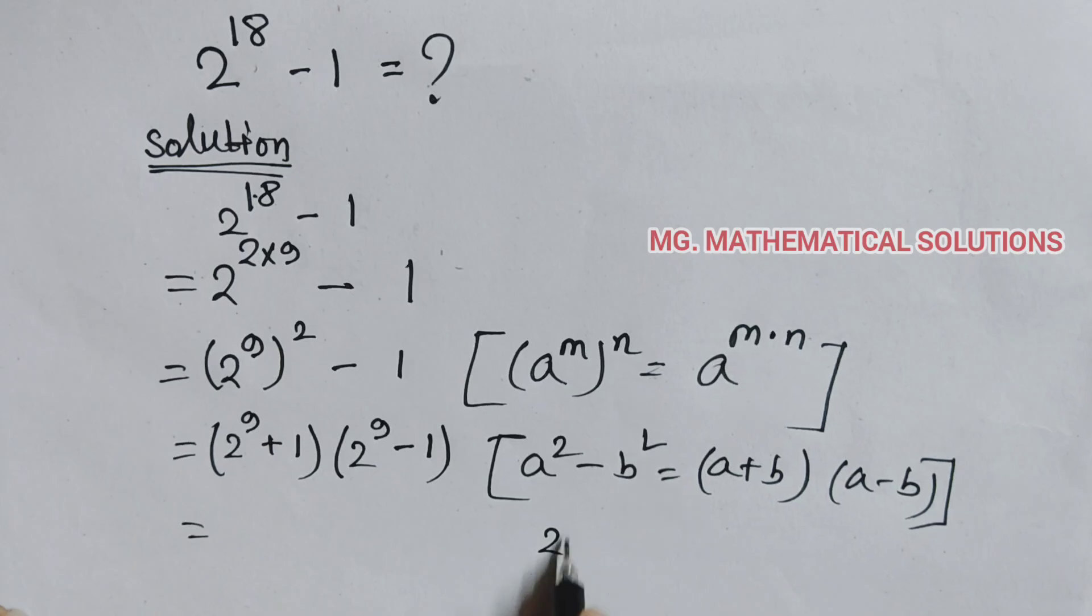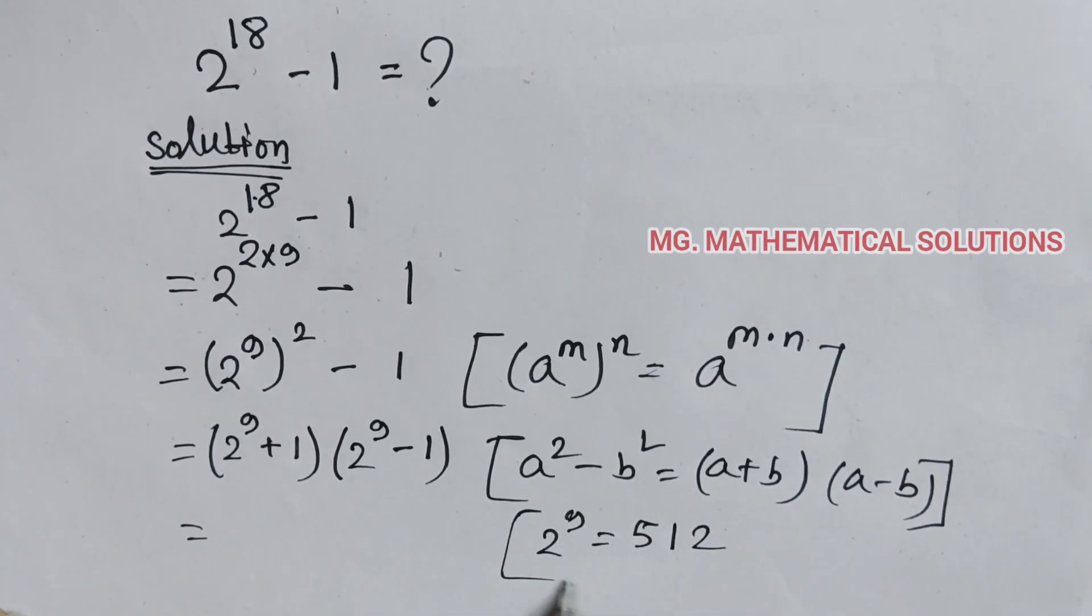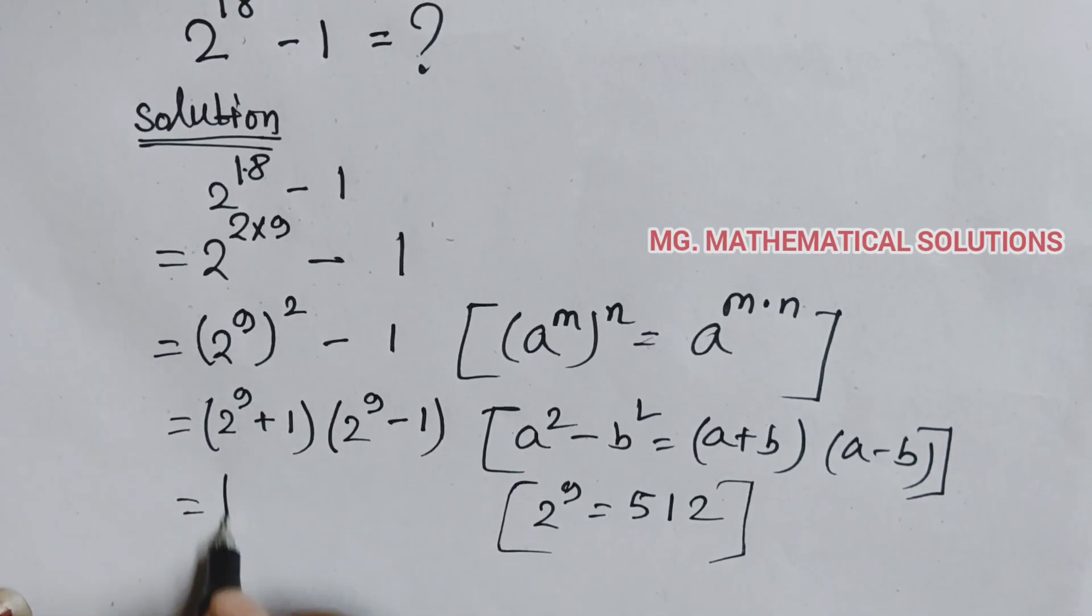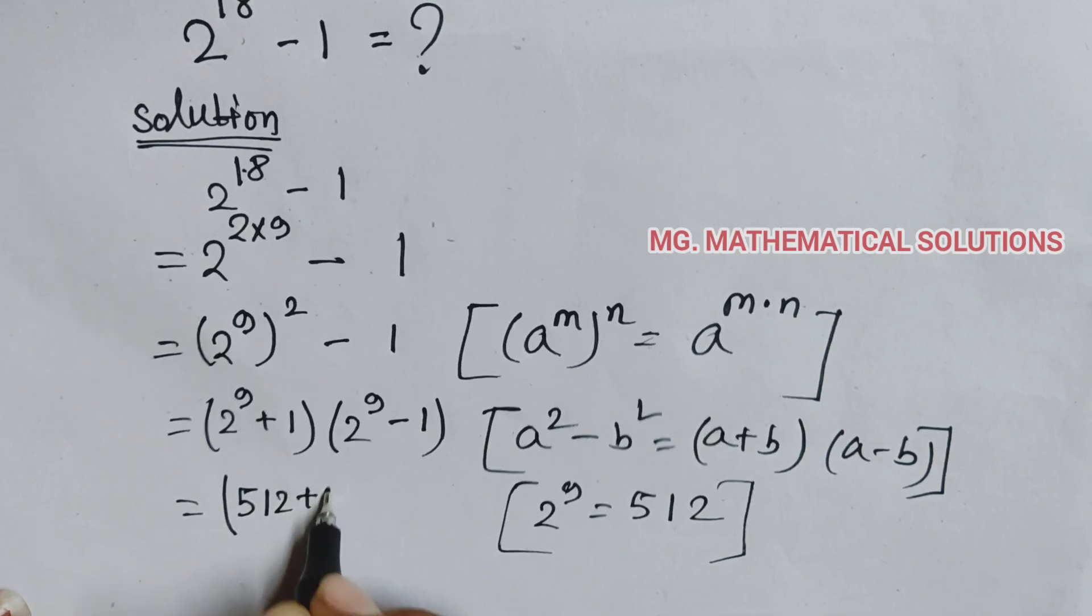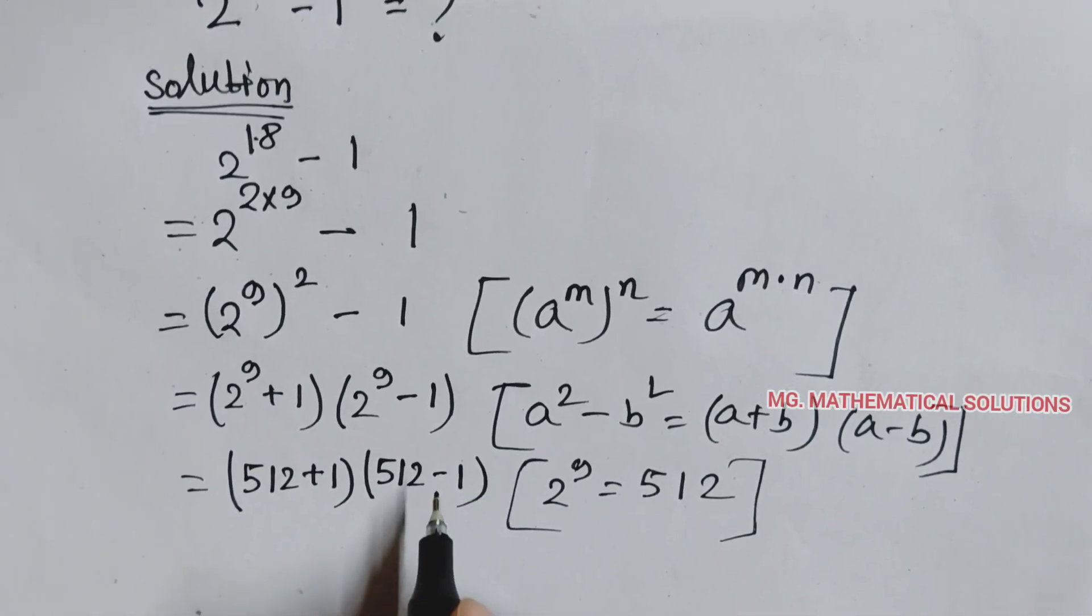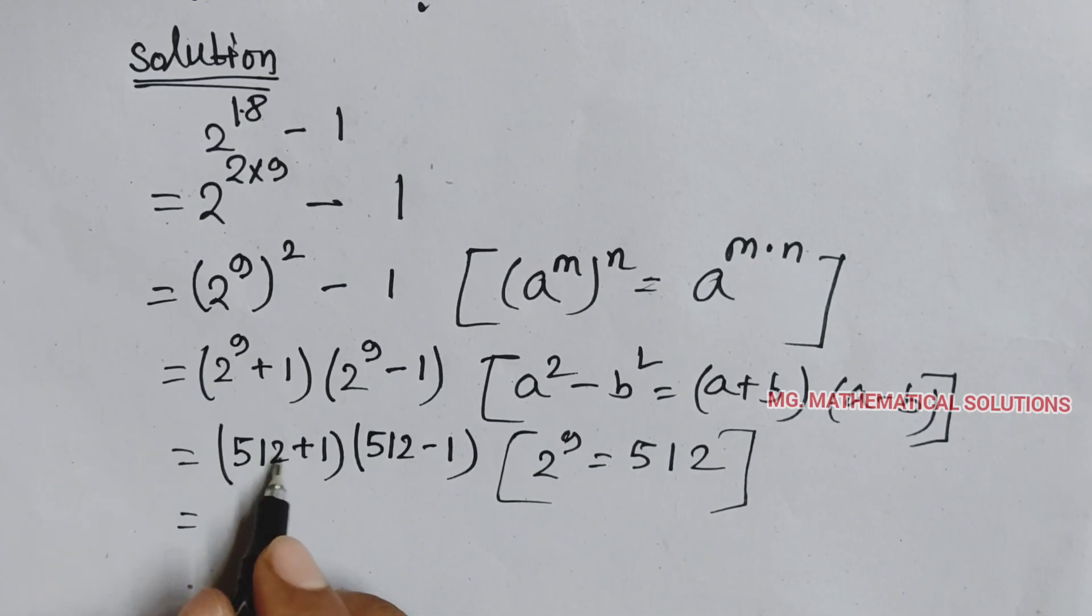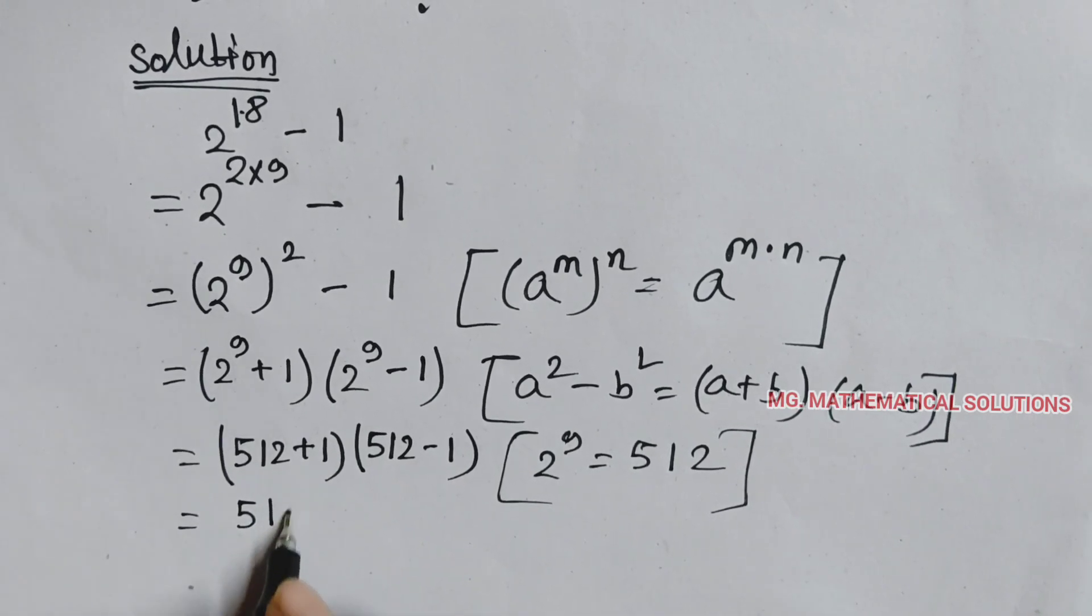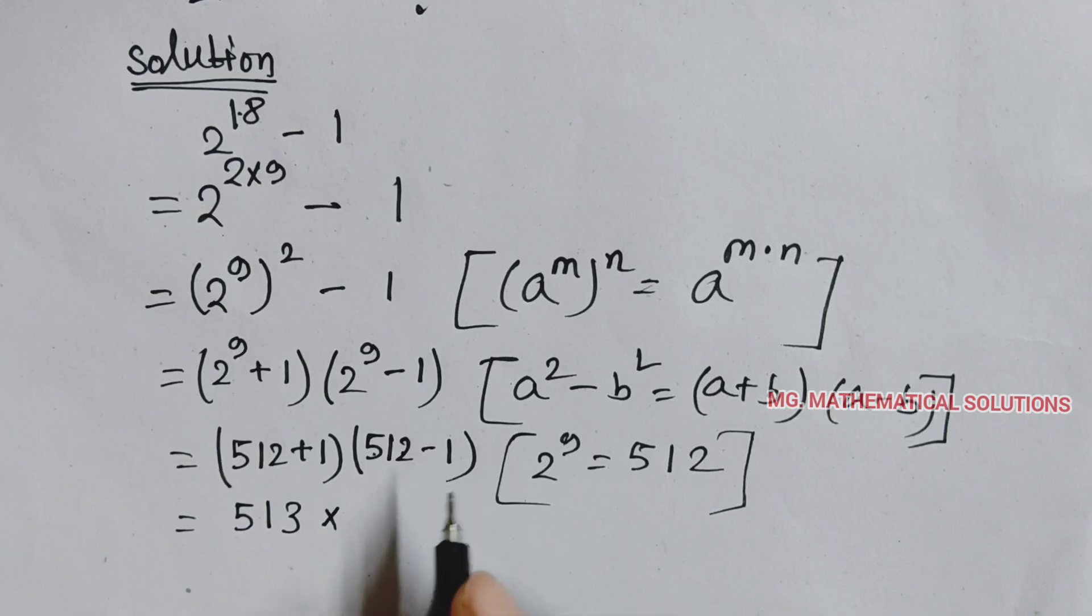So here 512 plus 1 into 512 minus 1. Equal to 512 plus 1, that's 513, into 512 minus 1 means 511.